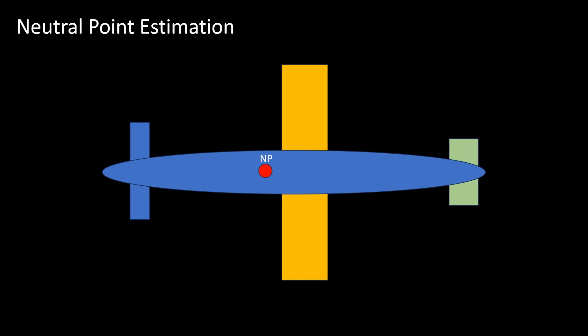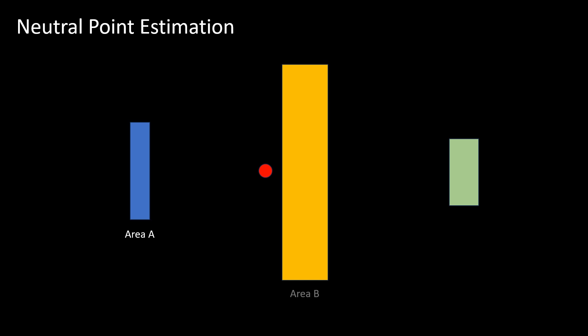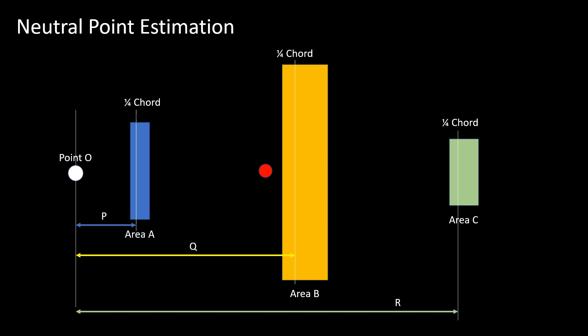Let's name the areas for the canard, wing and horizontal tail as area A, B, and C respectively. Point O is placed ahead of the canard to measure the distances to the quarter chords of the canard, wing and tail. These distances are P, Q, and R respectively. The wing and tail areas that get shadowed are reduced by a certain percentage to account for the effect of downwash.